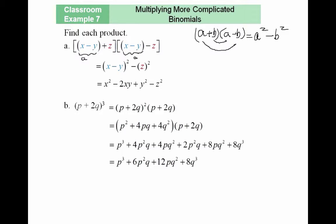This should equal the first term squared minus the second term squared. My first term is the expression x minus y, and my second term is z, so I get x minus y, all squared, minus z squared. Now I need to use my other formula to expand x minus y squared.